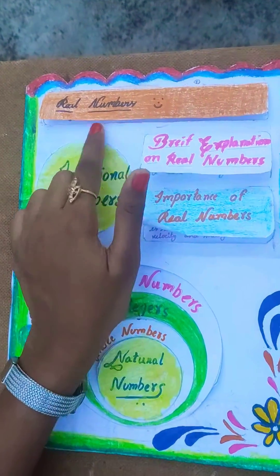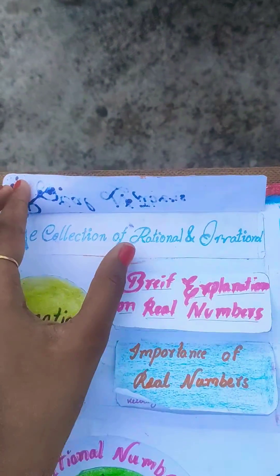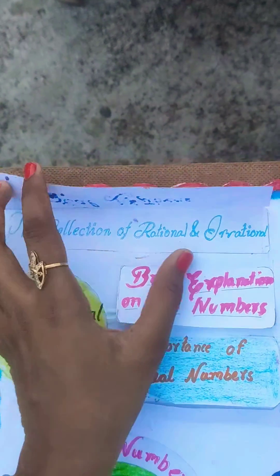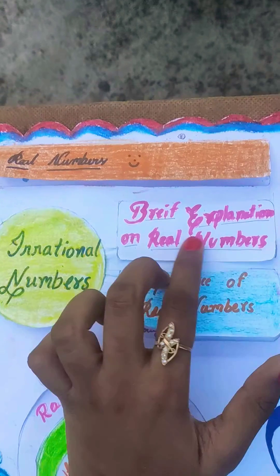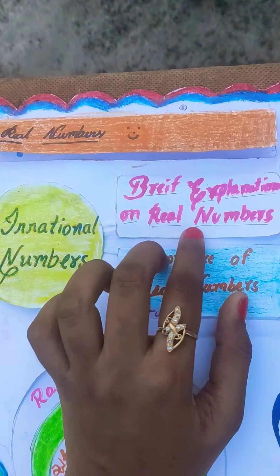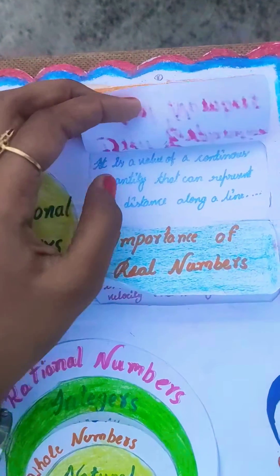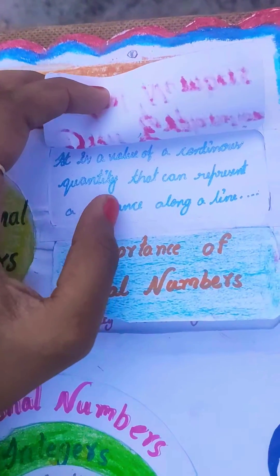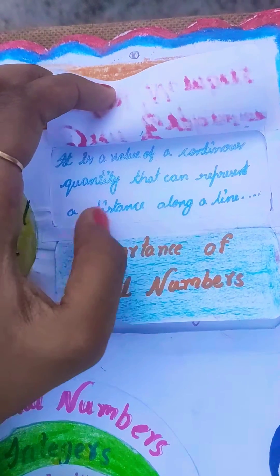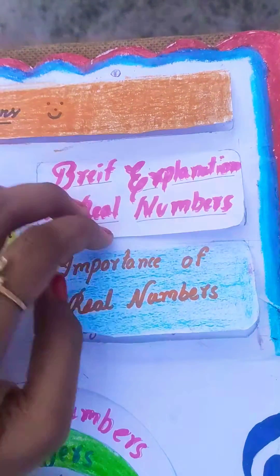Real numbers. The collection of rational and irrational numbers. Brief explanation on real numbers: it is a value of a continuous quantity that can represent a distance along a line.